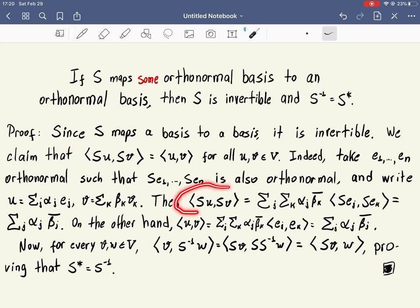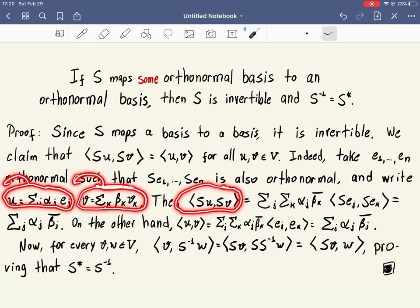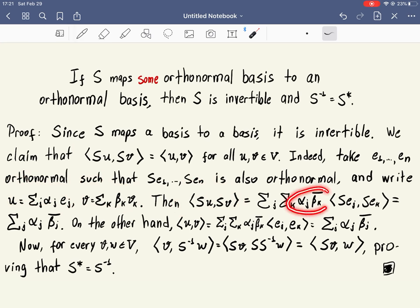What's the inner product of SU and SV? Well, substitute the formula for U, substitute the formula for V, use linearity or conjugate linearity. Then these sums go out of the inner product, and what we get is alpha J, beta J bar, and the sums appear here outside.